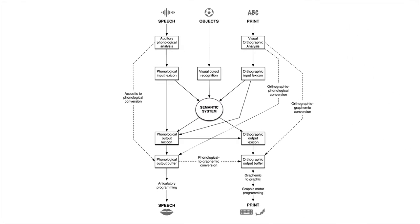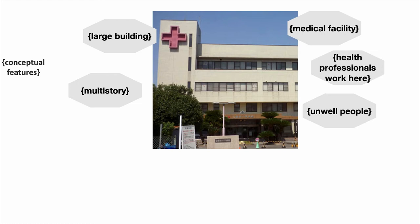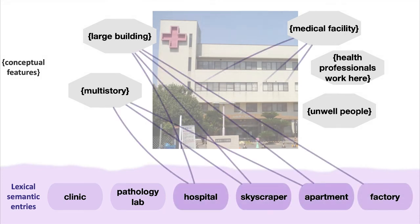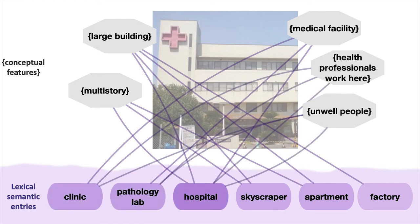Now let's talk about what happens when you want to produce your own word spontaneously — no input involved, you are just thinking of something and saying it. So if the idea is 'hospital', the conceptual features of what you're trying to say light up and it starts pre-linguistic. You think of an idea and even though it immediately forms words, the seed of that idea is not actually in language. Each word we know how to produce is mapped to these features: it's a large building, it's multi-storey, it's a medical facility, health professionals work there, unwell people go there. Then a lexical semantic entry is lit up that says yes, we have a word for this concept — here it is.